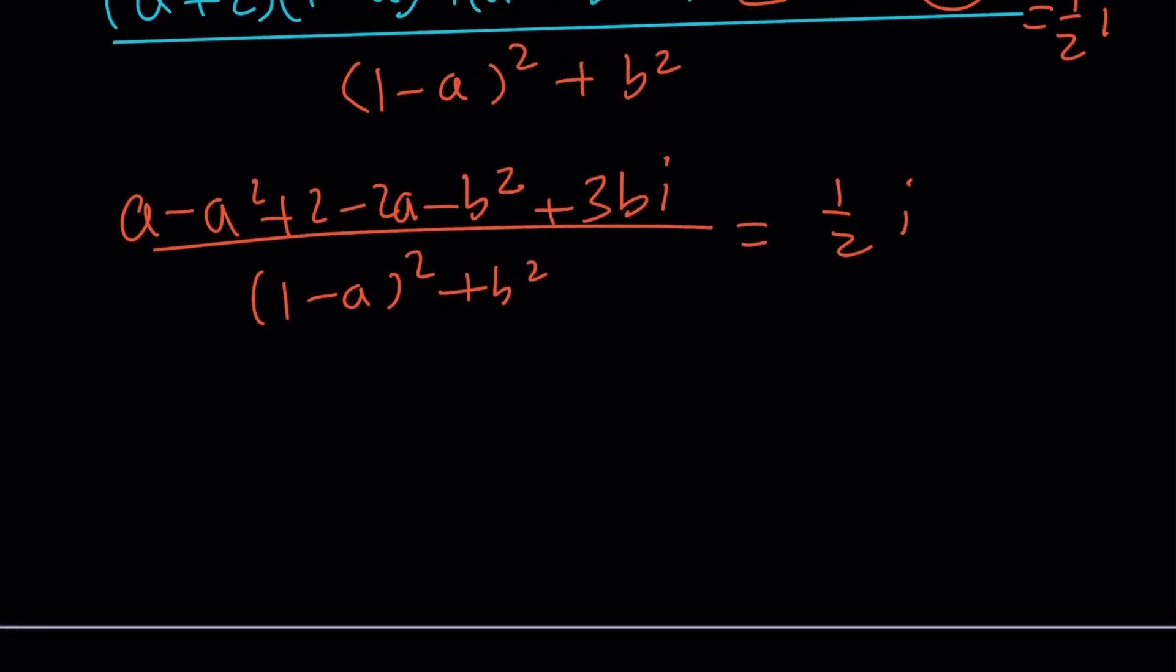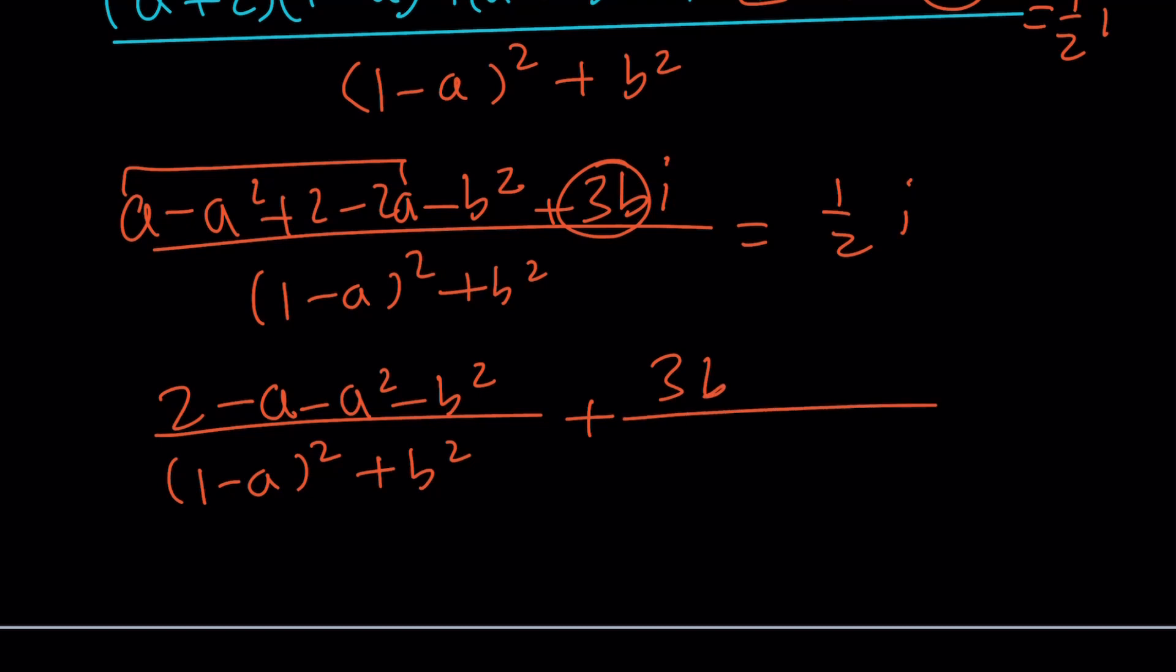Let's simplify the numerator a little bit and then separate the real parts and the imaginary parts. We can probably go with the two first. We have a 2 minus, this is going to give me a minus A and then minus A squared minus B squared. And that'll be divided by the denominator, 1 minus A squared plus B squared. Plus, the imaginary part 3 B is going to be divided by the denominator again, multiplied by I and this will equal 1 half of I.